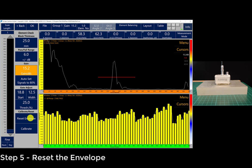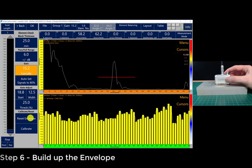Step five would be to reset the envelope in preparation for the actual calibration. Step six would be to build up the envelope by slightly moving the probe back and forward. You may have to press a little bit down on the probe to make sure all the signals are at their peak response.